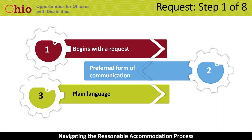Here are examples directly from the EEOC guidance. The first example: an employee tells her supervisor, 'I'm having trouble getting to work at my scheduled starting time because of medical treatments I'm undergoing.' This is a request for a reasonable accommodation because the employee indicates a problem with getting to work on time and relates this to a medical condition. The second example: an employee tells his supervisor that he would like a new chair because his present one is uncomfortable. Although this is a request for a change at work, he does not link his need for the new chair with a medical condition, so this is not a request for a reasonable accommodation.